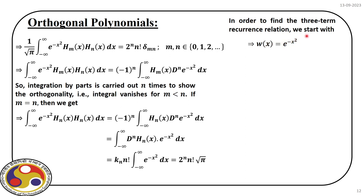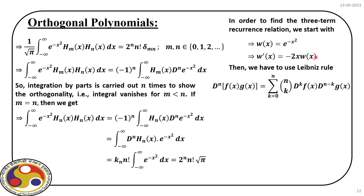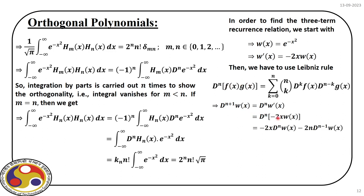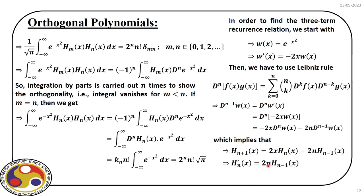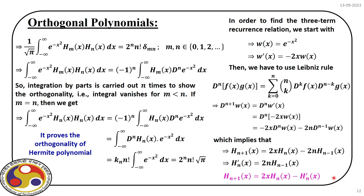The weight function is e^(−x²), and differentiating gives −2x·w(x). Applying the Leibniz rule and substituting the expression for w(x) we get the recurrence relation: Hₙ₊₁(x) = 2x·Hₙ(x) − 2n·Hₙ₋₁(x). Also, Hₙ′(x) is this quantity, and combining these two gives us the recurrence relation. The orthogonality and recurrence relation of the Hermite polynomial are thus established.